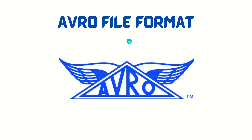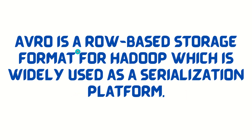The first format today is the Avro file format — very common and popular. Avro is a row-based storage format for Hadoop and is widely used as a serialization platform. Serialization means converting objects or data structures into binary format, so we can store things efficiently or transport data over a network without overhead. That's why we use serialize and deserialize concepts.